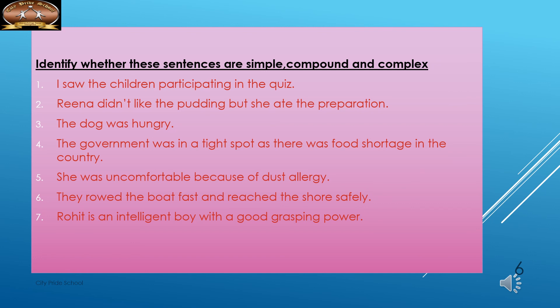'She was uncomfortable because of dust allergy' — complex sentence, with a subordinate clause. 'They rowed the boat fast and reached the shore safely' — compound sentence, two main clauses connected by coordinating conjunction 'and.' 'Rohit is an intelligent boy with a good grasping power' — simple sentence, only one finite verb and no conjunction. I hope this is clear — simple, compound, and complex sentences.